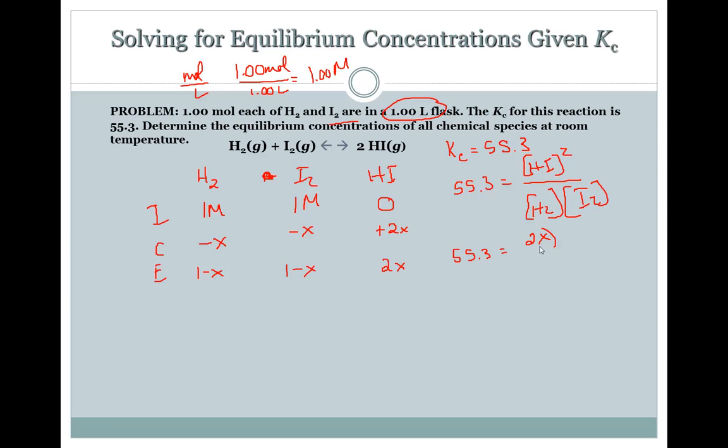If Q is equal to K, then the system is at equilibrium. If Q is less than K, then the system needs to shift to the product side. If Q is greater than K, then the system needs to shift to the reactant side.